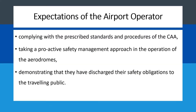What is the expectation of the airport operator when performing self-inspections? First, by performing self-inspection and the internal audit program, the airport operator will be complying with the prescribed standards and procedures of the CAA. Also, it means that you are taking a proactive safety management approach in the operation of the aerodrome. The safety management approach means you are identifying hazards, assessing the risks, and mitigating them — all of which are encompassed in your inspection program. As you conduct your inspection, you are simultaneously performing all these actions.